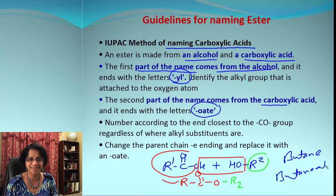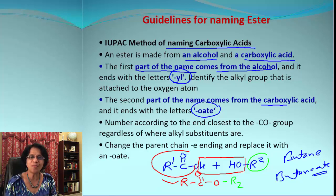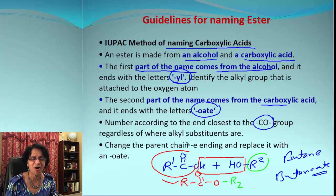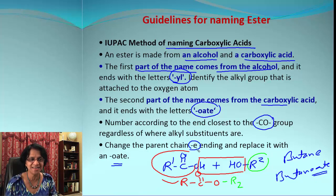For numbering, we number the carbon atom which is closest to the carbonyl group first, irrespective of where the alkyl substituents could be.